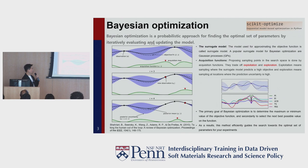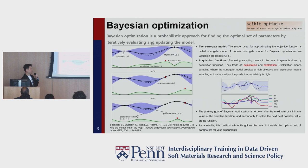There are many kinds of acquisition functions, so you can choose one depending on your target. This figure shows the process of Bayesian optimization. Using two initial points, the surrogate model makes an approximation of the objective function. And the acquisition function determines the next sampling point — the triangle shows the next sampling point. Every iteration, Bayesian optimization repeats this kind of process.